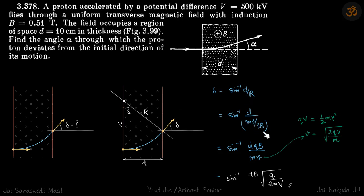So r is mv by qb and velocity we can find by the initial condition when the proton is accelerated through V voltage.